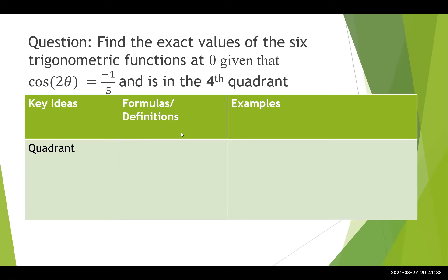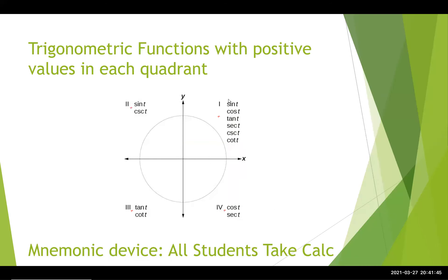The quadrant matters because it tells you whether or not the trig function is positive or negative. Specifically, in quadrant 1, everything is positive. In quadrant 2, sine and its reciprocal is positive. Quadrant 3 is tangent and its reciprocal, and quadrant 4 is cosine and its reciprocal.